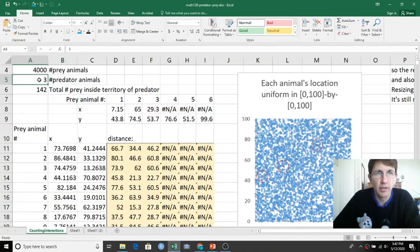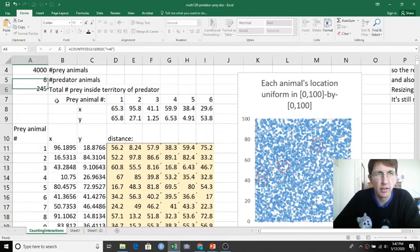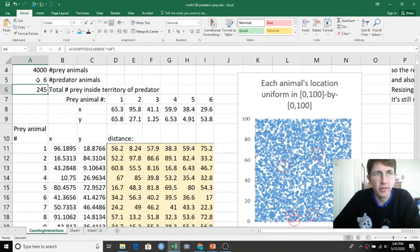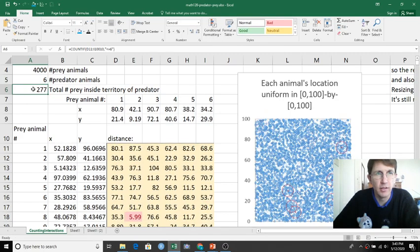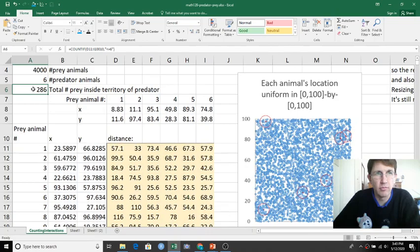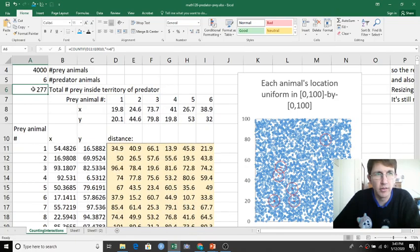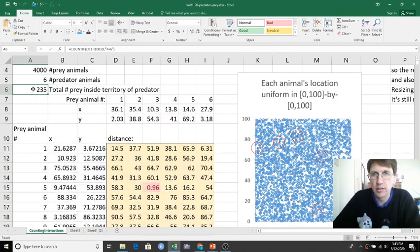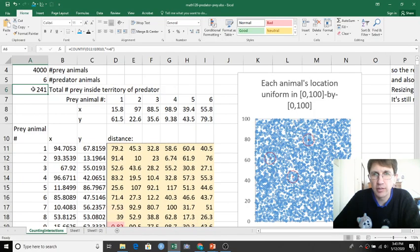What if I double the number of predator animals from 3 to 6? What do you think will happen to the total number of prey available to be eaten? It was like 140-something. Is it now almost 300, like 280-ish? So hopefully that makes sense.